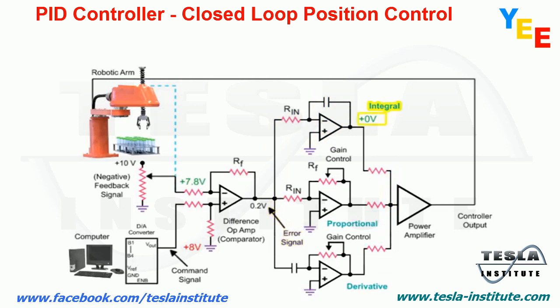The output of the integral amplifier increases and is further amplified by the power amp to overcome the friction and mass of the robotic arm, completing the final move to the desired position. The feedback signal is now equal to the command signal, the output voltages of the amplifiers are zero, and the robotic arm motor stops turning.